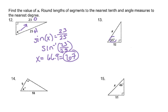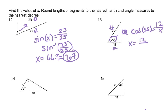Mark the angle, and we have adjacent over hypotenuse. So this will be cosine 55 equals 12 over X. We're going to divide because X is in the denominator, so X equals 12 divided by cosine 55, and we will get 20.9.